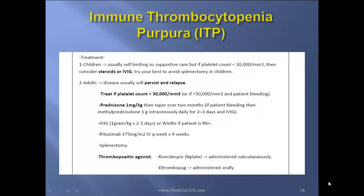Treatment in children: usually self-limiting, so supportive care, but if platelet count is less than 30,000, consider steroids or IVIG. Try your best to avoid splenectomy in children. In adults, disease usually will persist and relapse. Treat if platelet count is less than 30,000, or less than 50,000 in a bleeding patient. Prednisone 1 mg/kg, then taper over two months. If patient is bleeding, consider methylprednisolone 1 gram IV over two to three days and IVIG. If patient is RH positive, consider WinRho. Rituximab 375 mg/m² IV weekly times four weeks. Splenectomy if disease persists. Thrombopoietin agonists: romiplostim administered subcutaneously, eltrombopag administered orally.